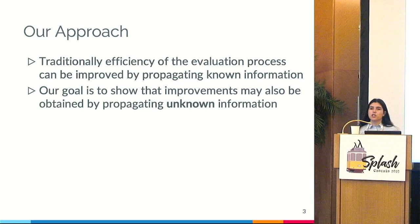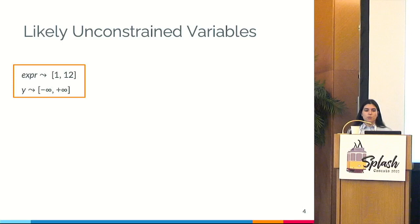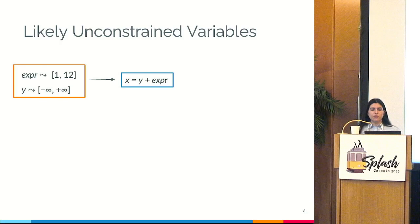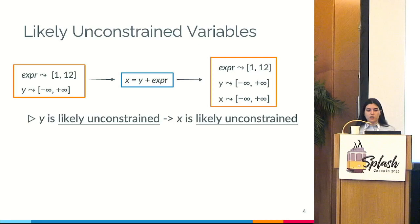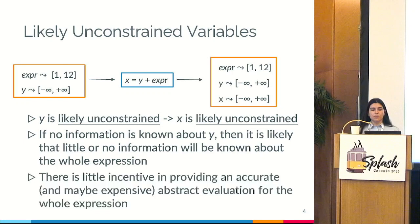Our goal in this work is to show that improvements may also be achieved by propagating unknown information. To explain that, I introduce the concept of likely unconstrained variables. For example, in an interval analysis, suppose we have variable expression bounded by 1 and 12, and variable y which is unbounded. For the assignment x = y + expression, after analysis x is also unconstrained, because y is likely unconstrained. So there is little incentive in providing an accurate and expensive evaluation of an expression containing a likely unconstrained variable.